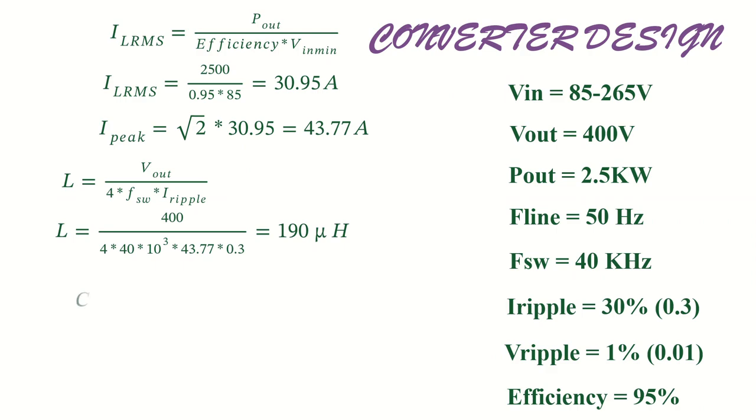Value of capacitance is calculated using the equation C_out equals P_out divided by V_out, all divided by 4 pi times line frequency times voltage ripple. That is C_out equals 2500 divided by 400, all divided by 4 pi times 50 times 400 times 0.01, which gives 2486 microfarad as the value of capacitance.